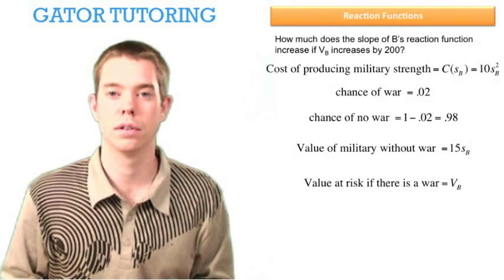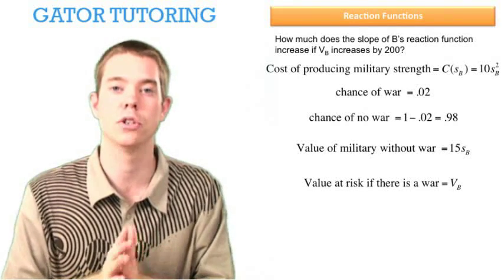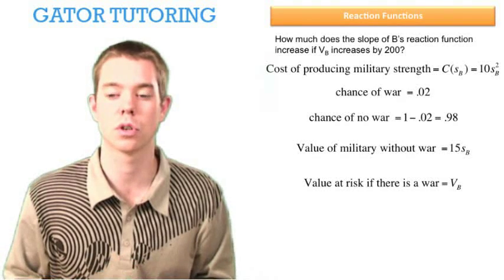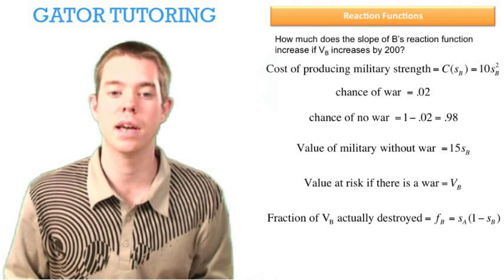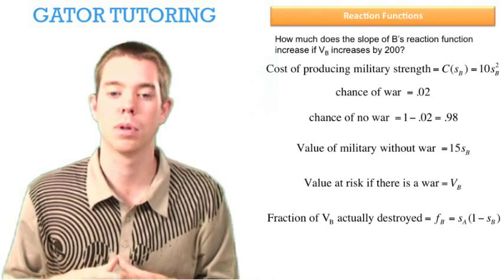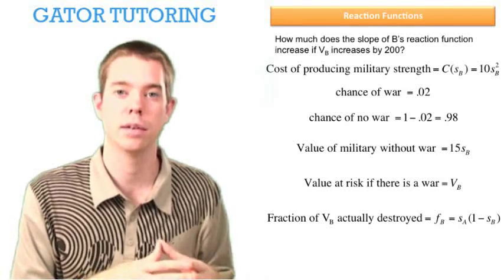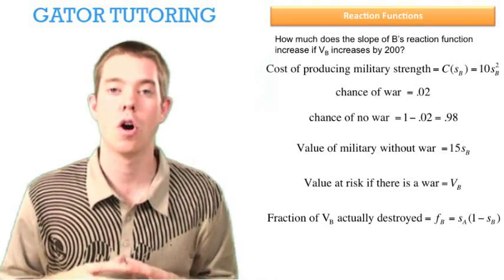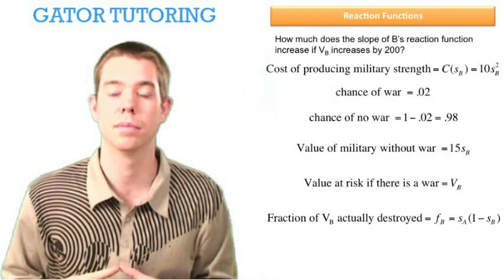Notice VB is what the question is asking us. It tells us that VB increases by 200. So VB we're going to need to use later, but it's not given to us in the question. It's left in variable form. It then tells us the fraction of VB actually destroyed if there is a war is SA multiplied by (1-SB). So the military strength of country A multiplied by (1 minus the military strength of country B) all multiplied by VB. That will tell us our expected military losses.